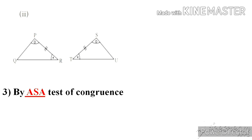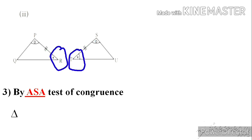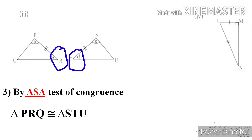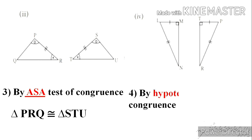In the third figure, angle P is congruent to angle S, side PR is congruent to side ST, and angle R is congruent to angle T. By ASA test of congruence, triangle PRQ is congruent to triangle STU.